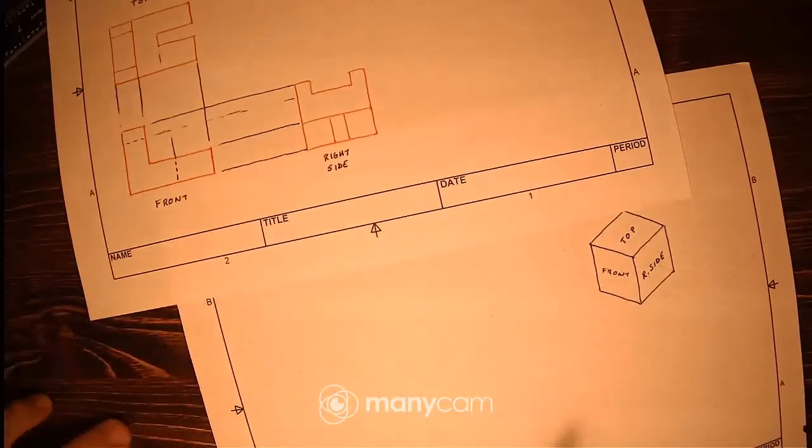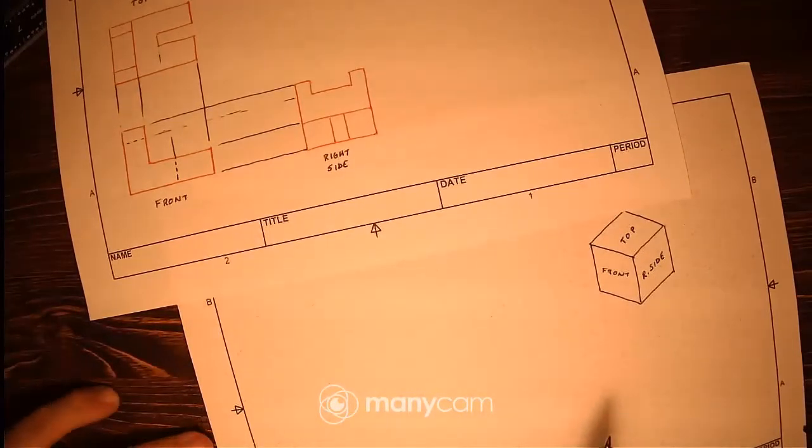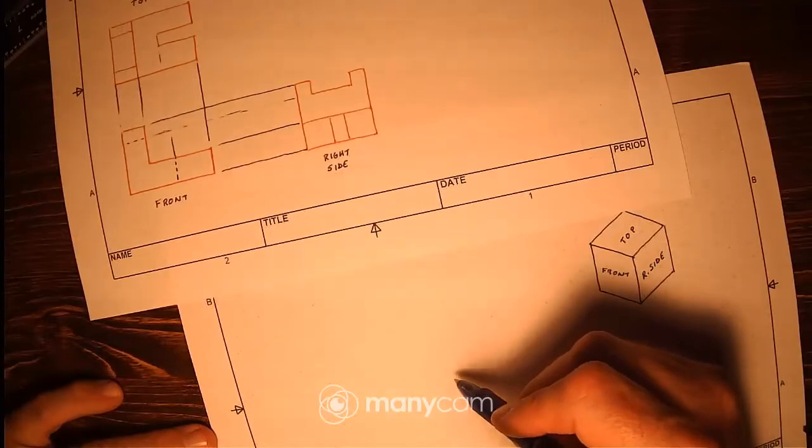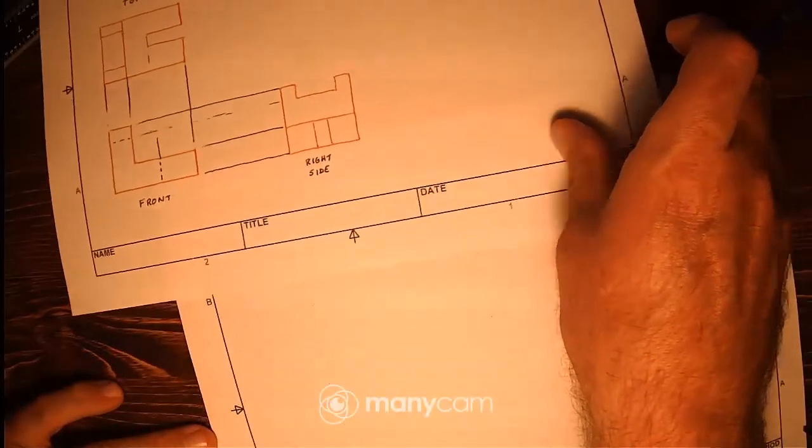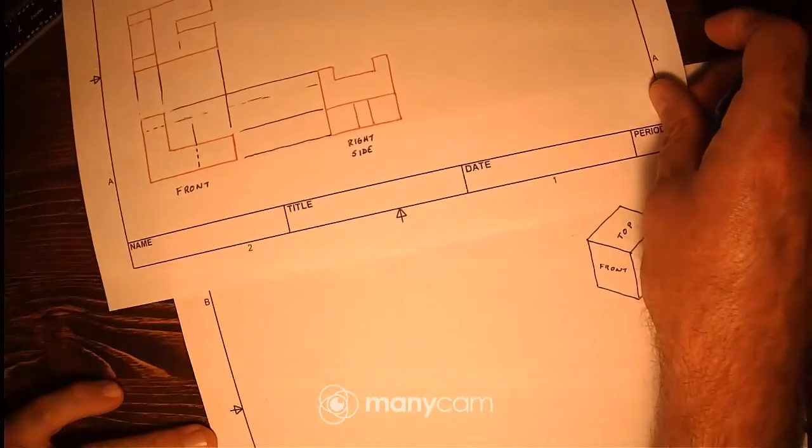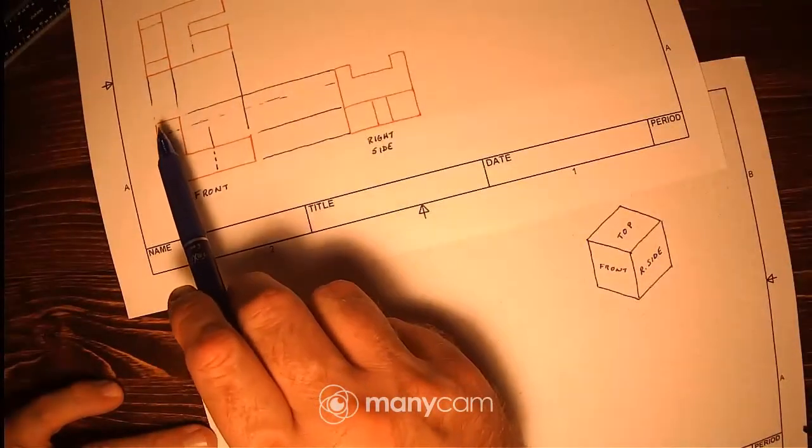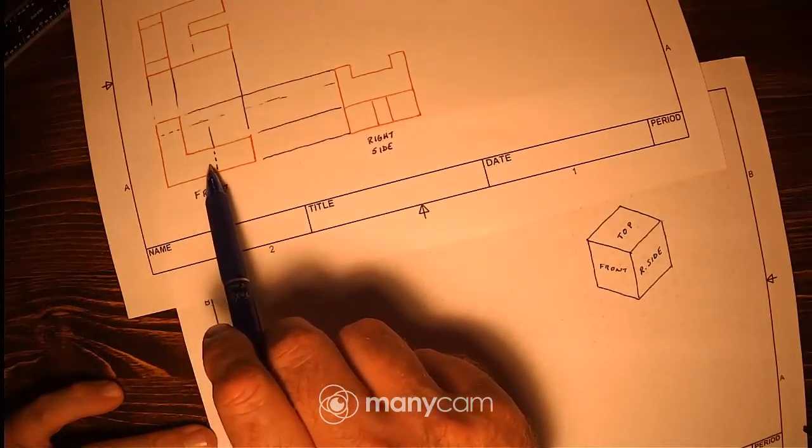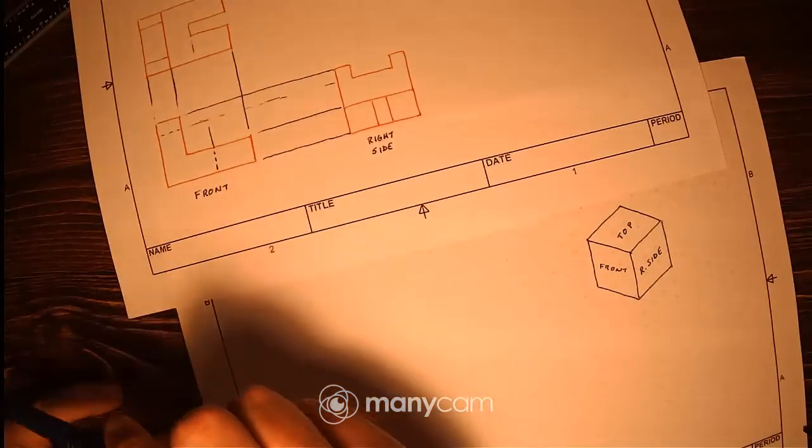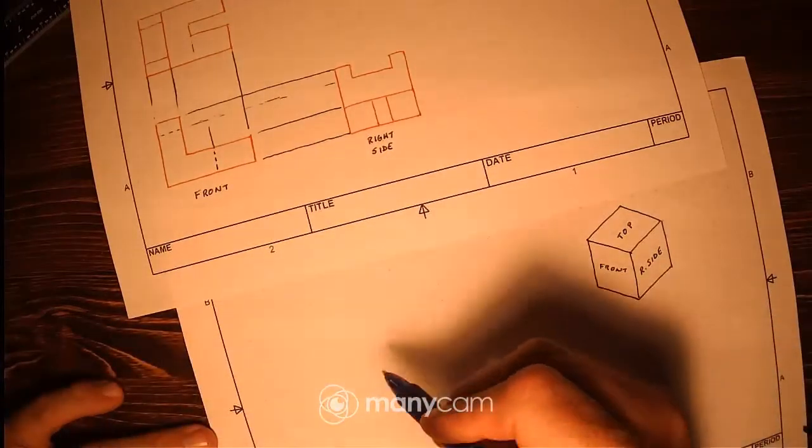So if I look at my front view here, there's a couple ways to turn that. I know that, let me scoot this down just some. I've got 1, 2, 3, 4, 5 by 1, 2, 3, 4, 5, 6, 7. Alright, so let's take a look at how to do that.